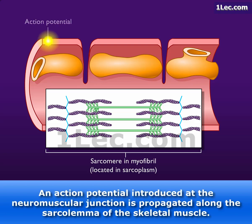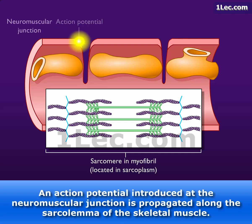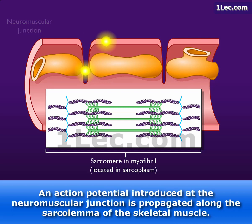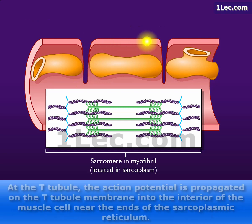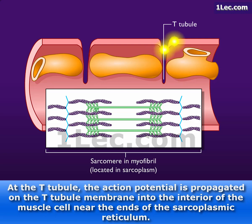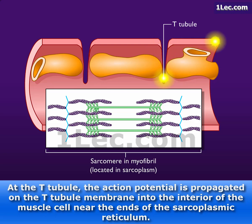An action potential introduced at the neuromuscular junction is propagated along the sarcolemma of the skeletal muscle. At the T-tubule, the action potential is propagated on the T-tubule membrane into the interior of the muscle cell near the ends of the sarcoplasmic reticulum.